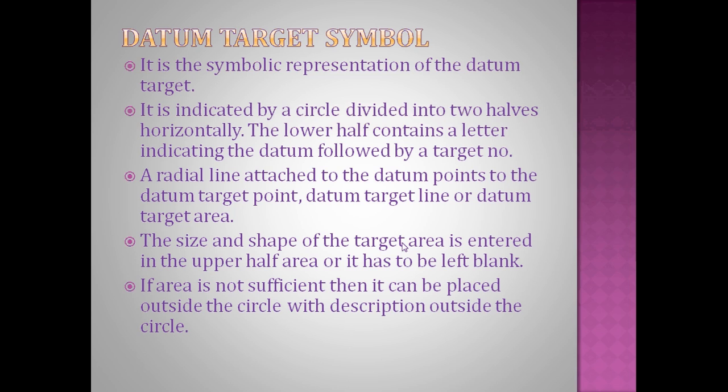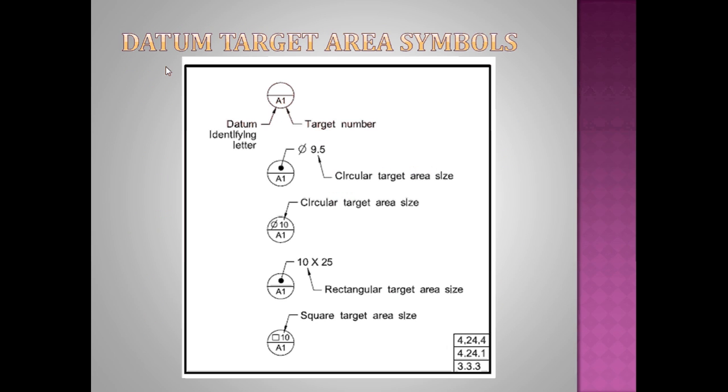How do we represent this? It basically consists of a circle which is divided into two different halves horizontally by a horizontal line. The upper half indicates the size of the area. The lower half indicates an alphabet letter which indicates the datum, followed by a target number. We can see those things here - there is a circle divided into two different halves, upper half and lower half. The lower half consists of an alphabet letter indicating datum and then a number which indicates target number.